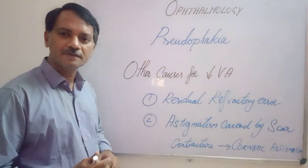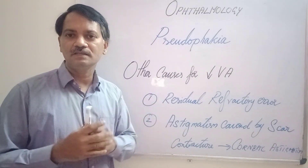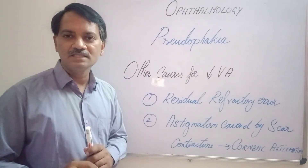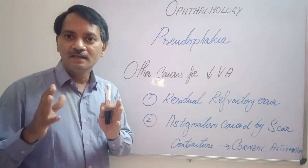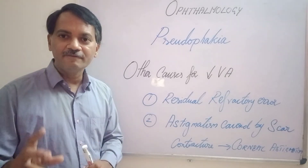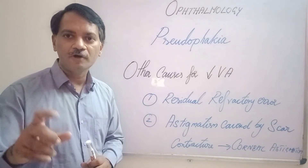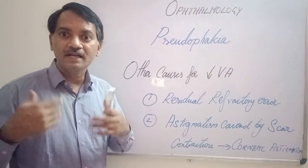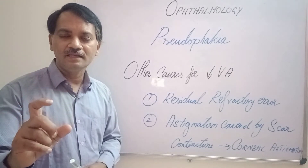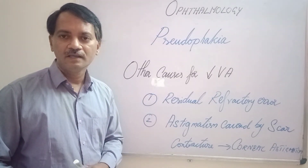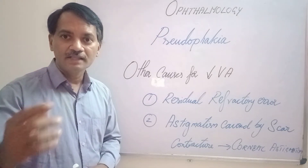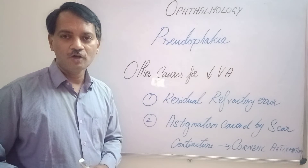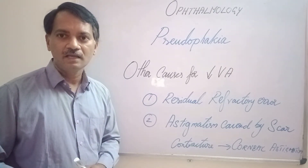Different types of cataract surgeries have different incision lengths. The bigger the incision, the bigger the wound and the scar formation. Scars undergo contracture at a later stage. Bigger scars lead to bigger contractures that alter the curvature of the cornea, causing significant astigmatism and reducing vision considerably. This astigmatic error has to be corrected with spectacles to improve the patient's vision.